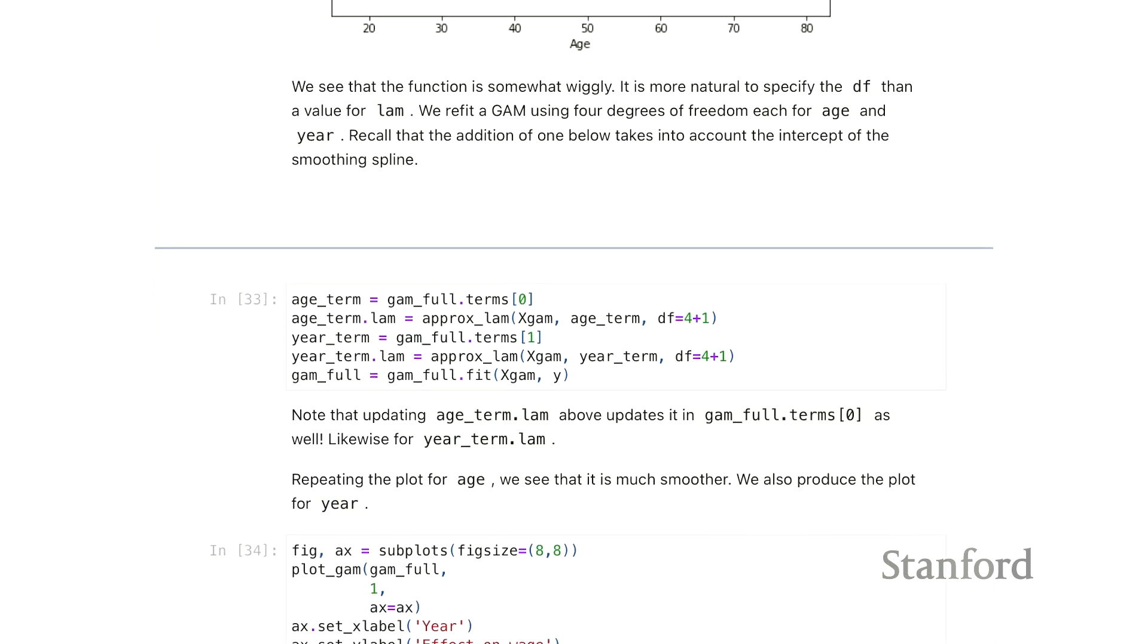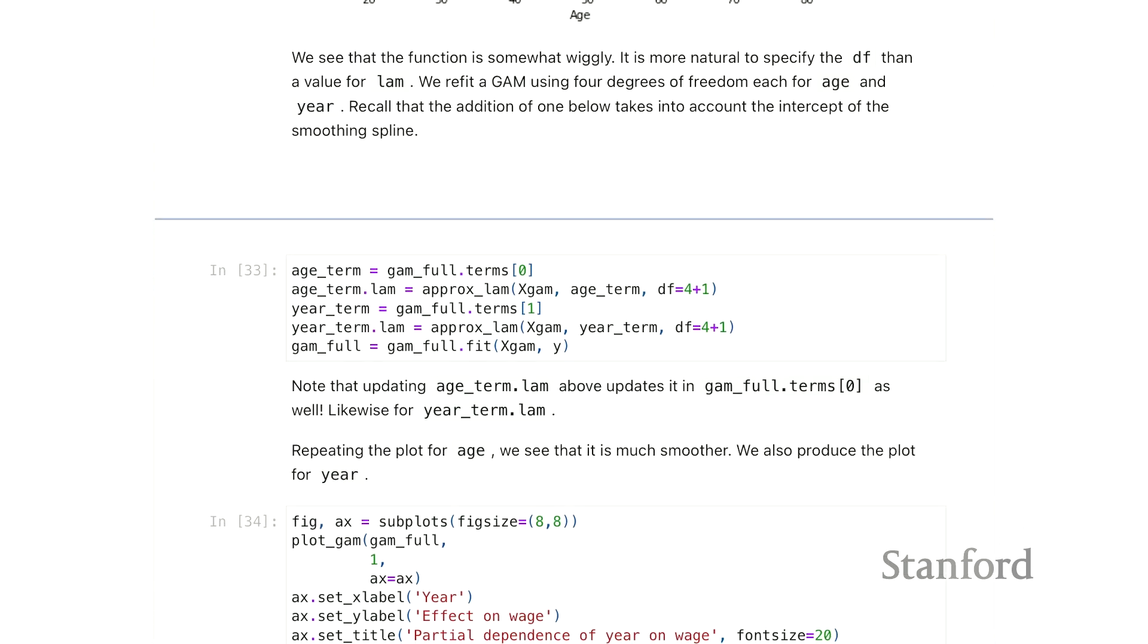So maybe one thing we could do is we could try to estimate a lambda that gives us a certain number of degrees of freedom. So here we're going to try and get five degrees of freedom for the age term and five degrees of freedom for the year term. And that corresponds to finding these lambda values.